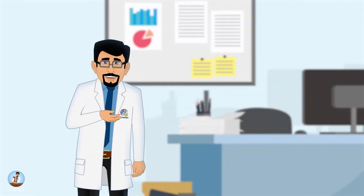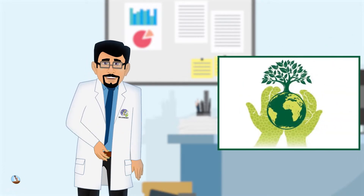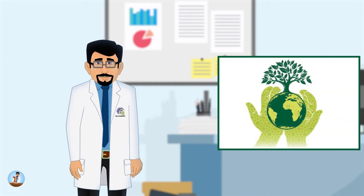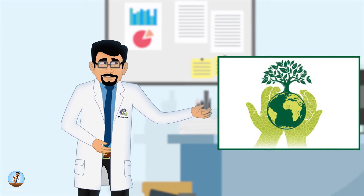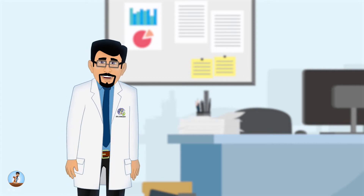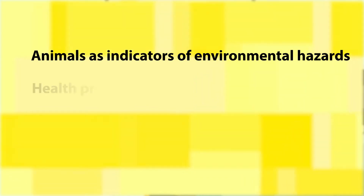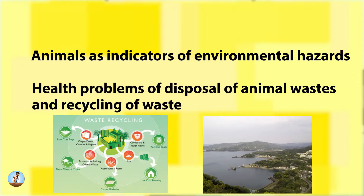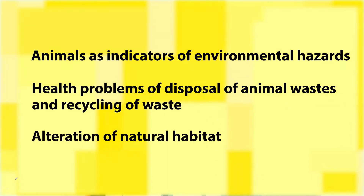VPH is also important in controlling environmental health hazards. Veterinary public health is actively concerned with a number of components of environmental protection, and in the future this can be expected to become a much more important VPH function, such as the use of animals as indicators of environmental hazards, the health problems of disposal of animal waste, recycling of waste, and alteration of natural habitat.